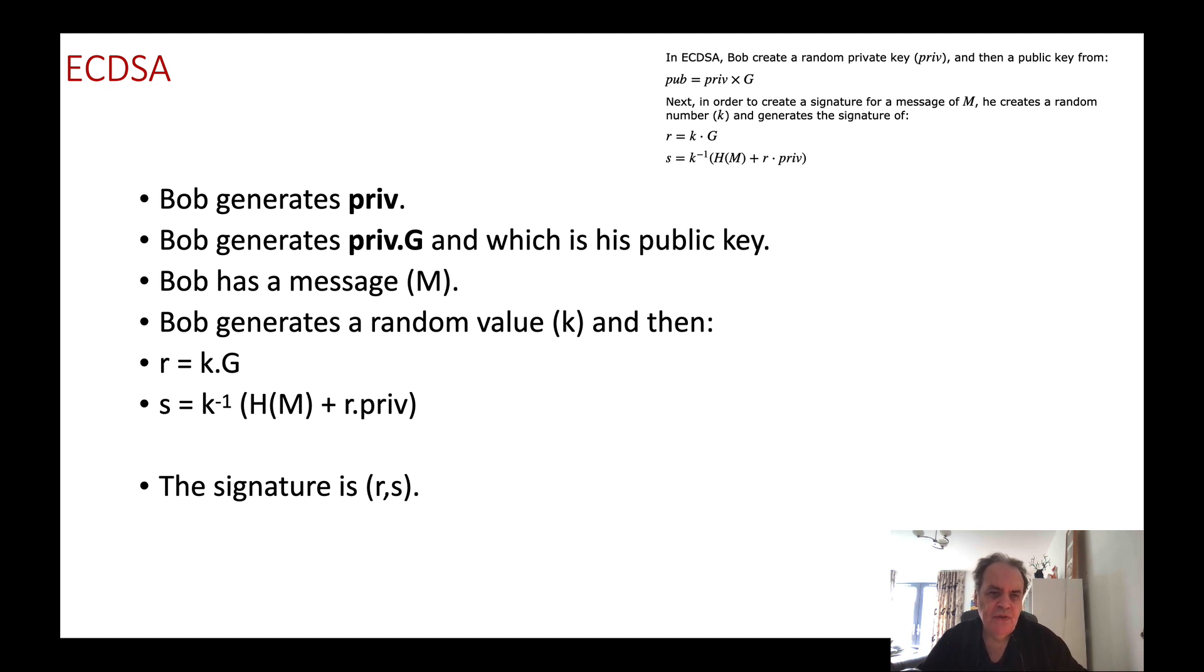Here's the basic method. Bob generates a random 256-bit value, which is his private key. He generates the public key by taking the base point and multiplying it by his private key to give his public key PK. He takes the message, hashes it, then takes a random value K and produces a point R, which is K times G. We typically only need the X coordinate of the R value.